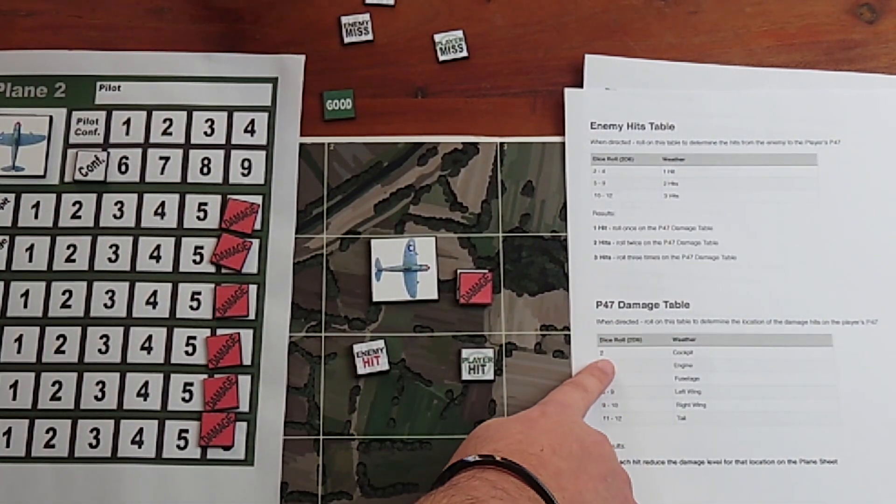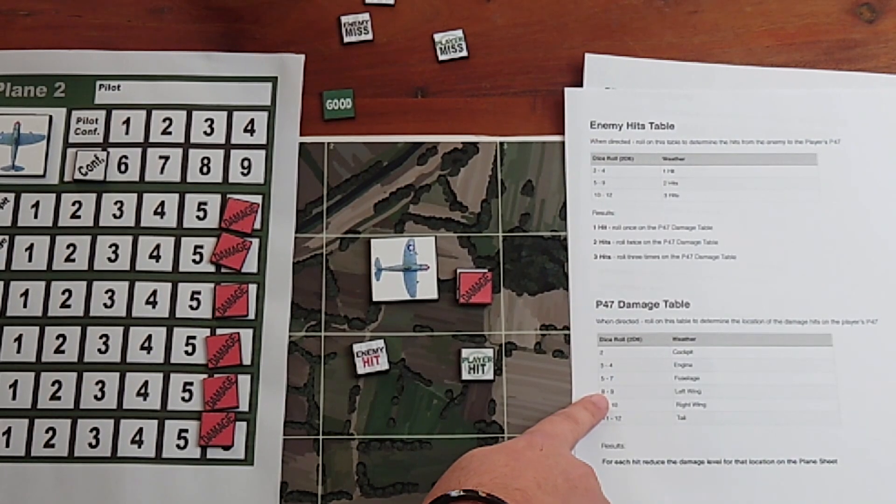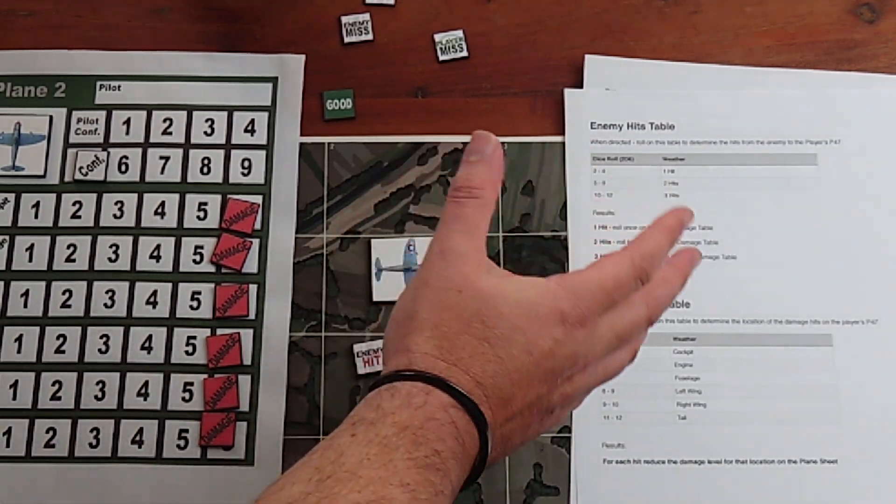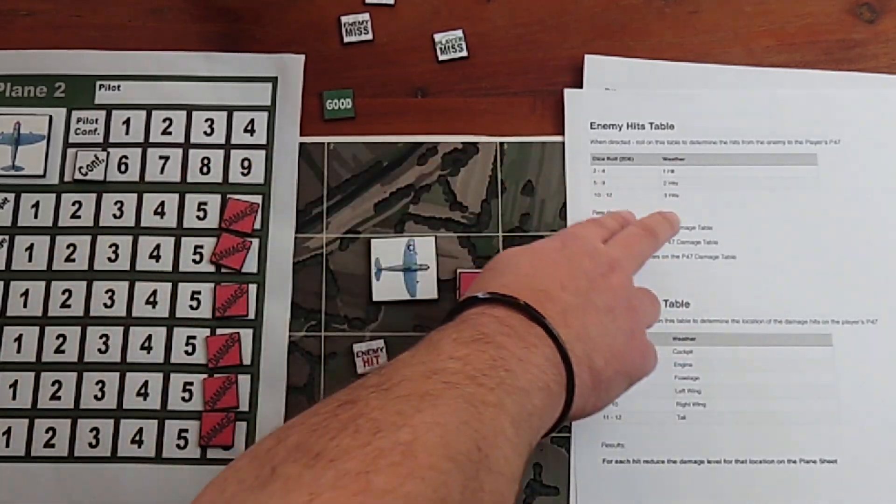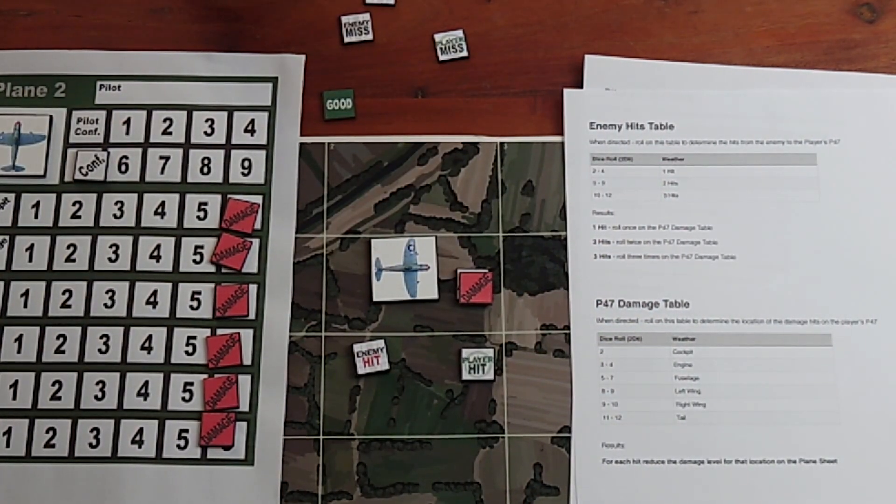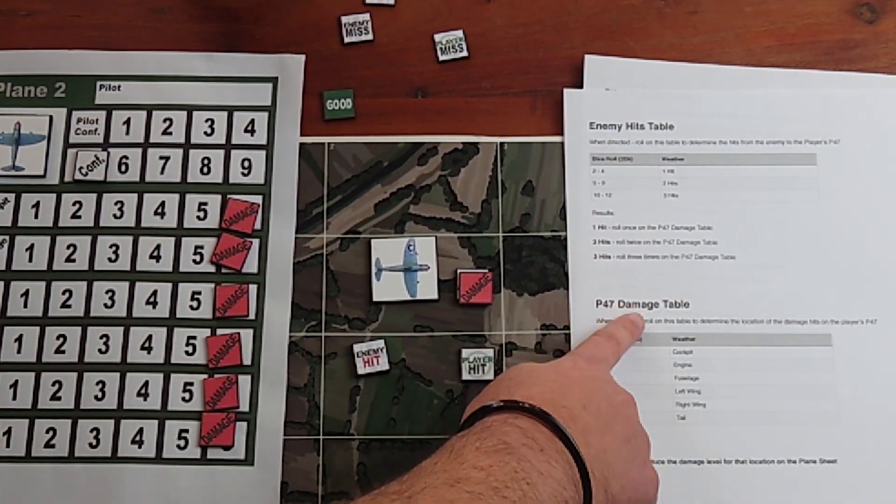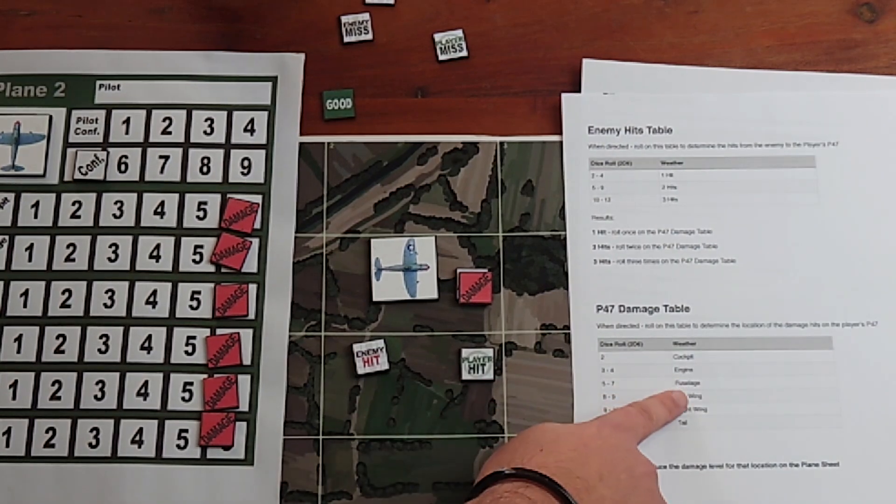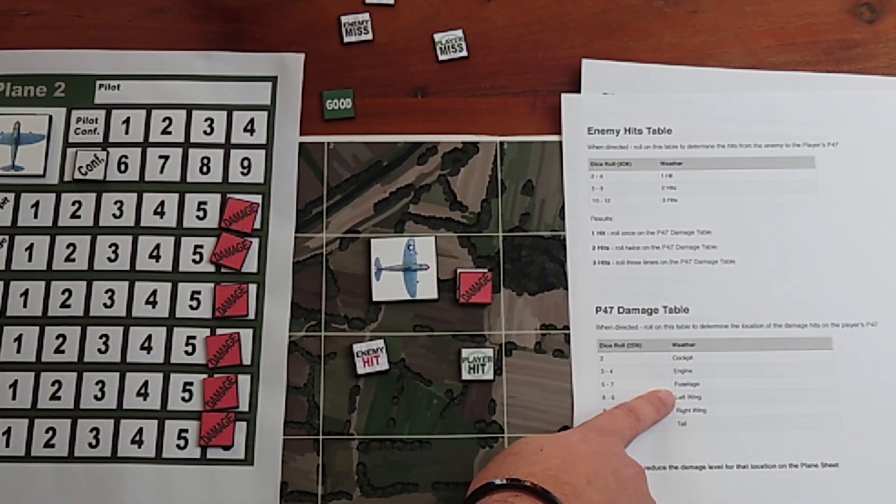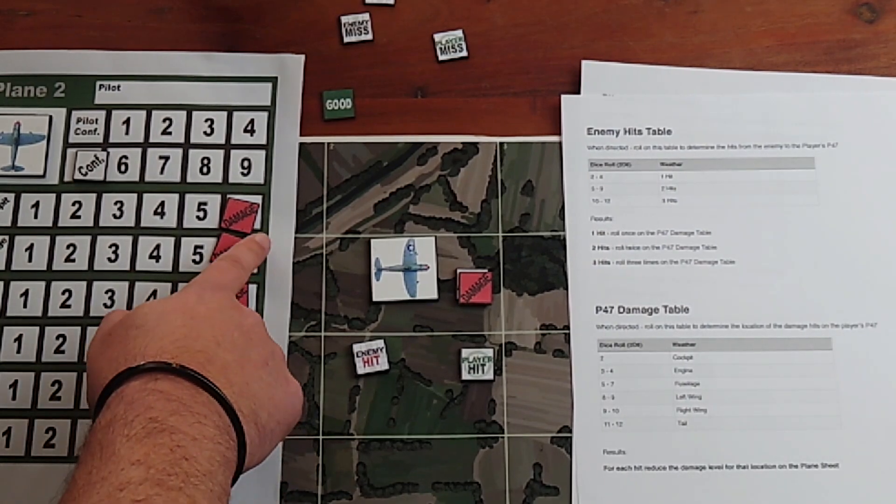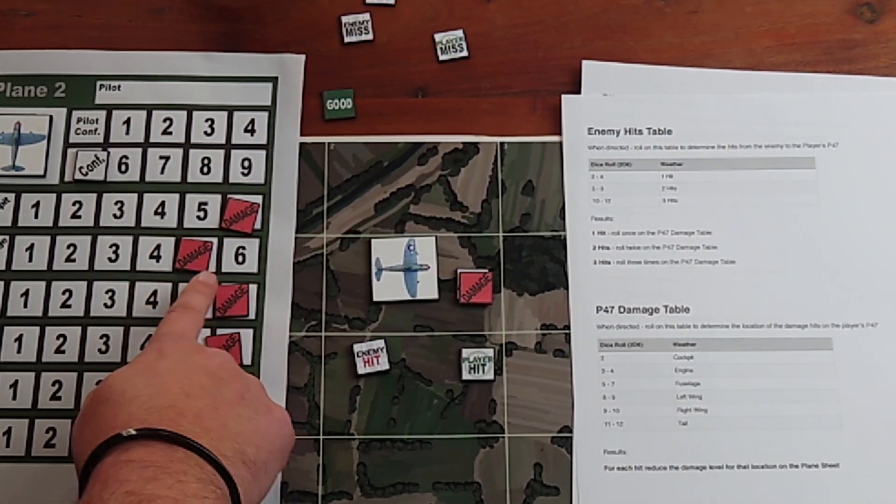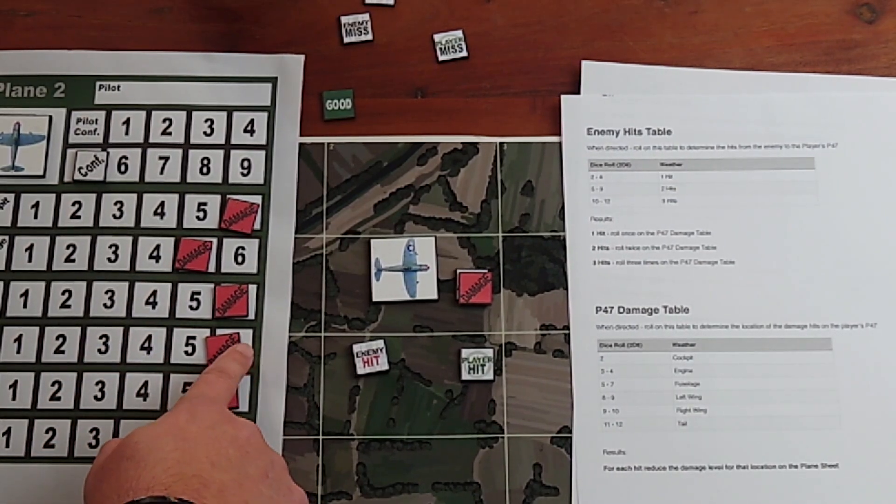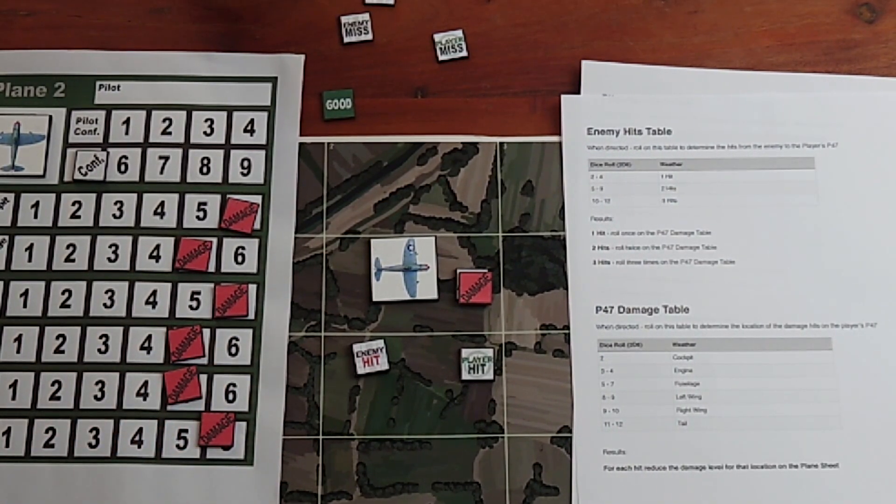For each one of those hits, we would then roll on the P-47 damage table to see where the damage has occurred. Let's say for example it scores three hits. I roll on the P-47 table three times. Let's suppose we get a fuselage, left wing, and a right wing. I then move these damaged counters here on the plane sheet across: fuselage, left wing, right wing, for example.